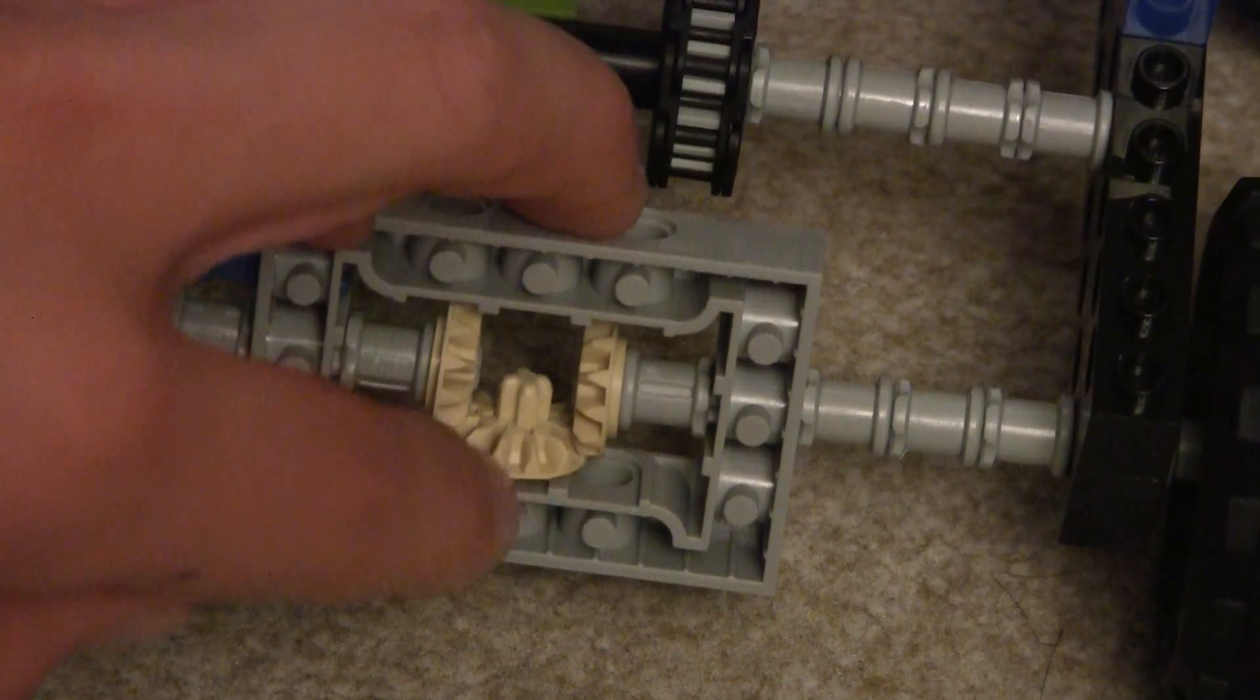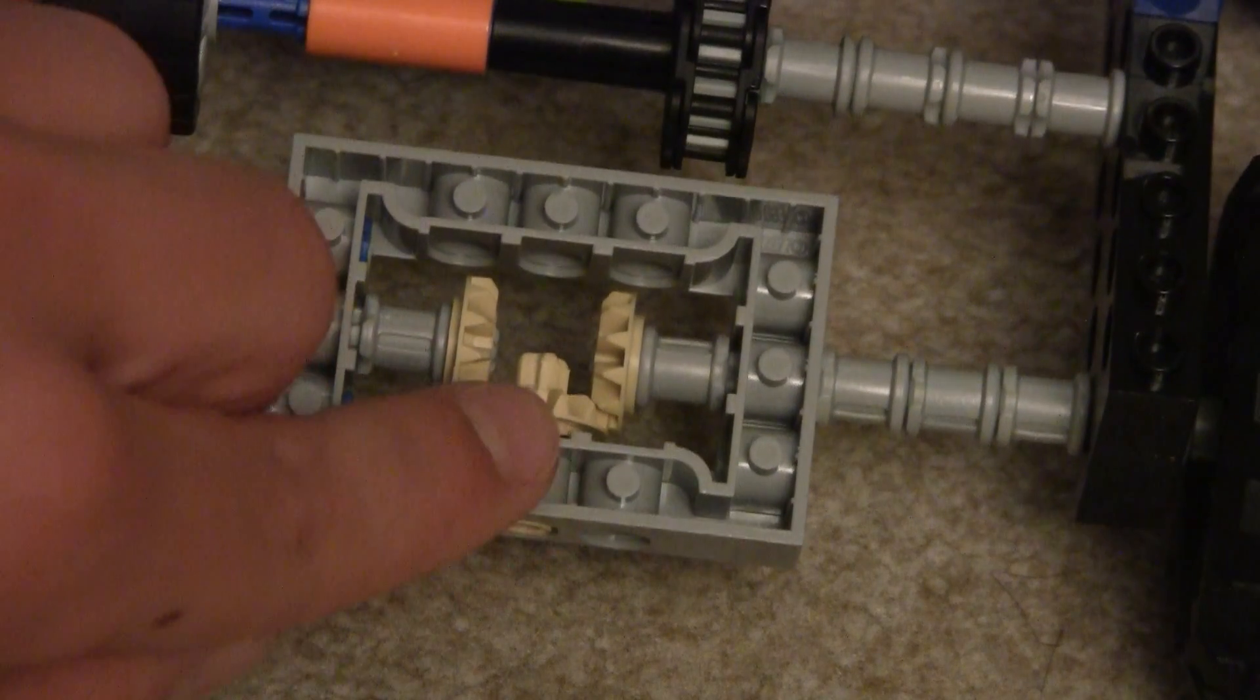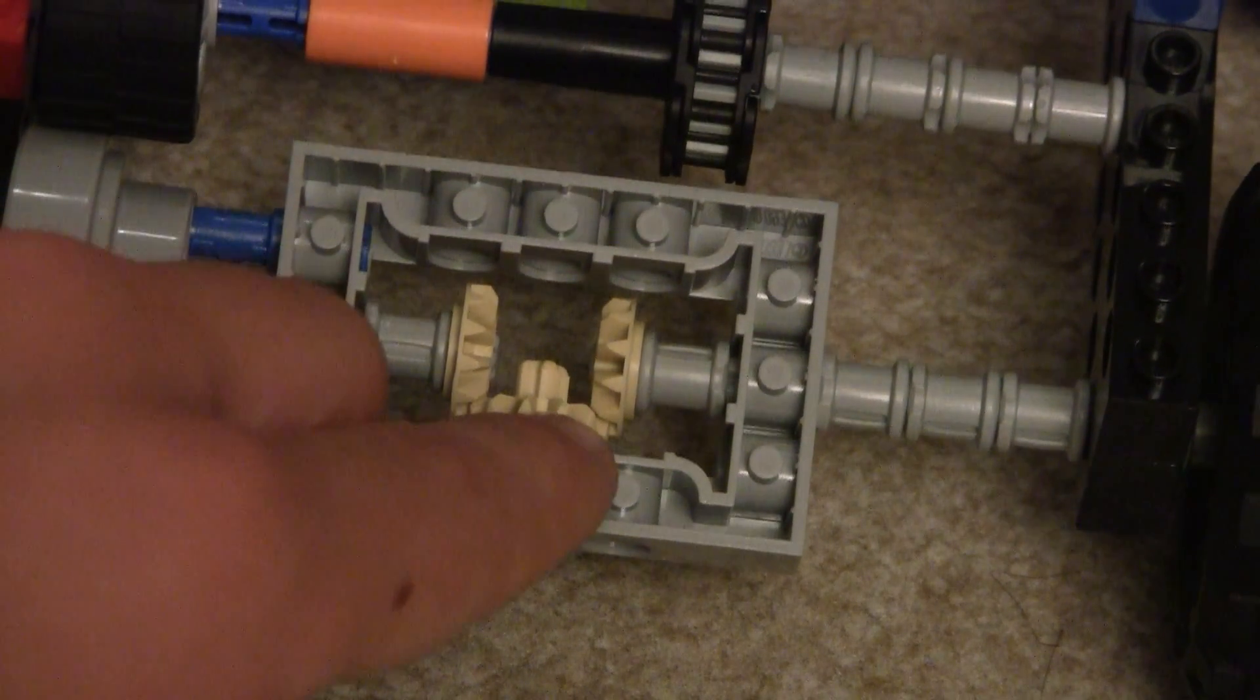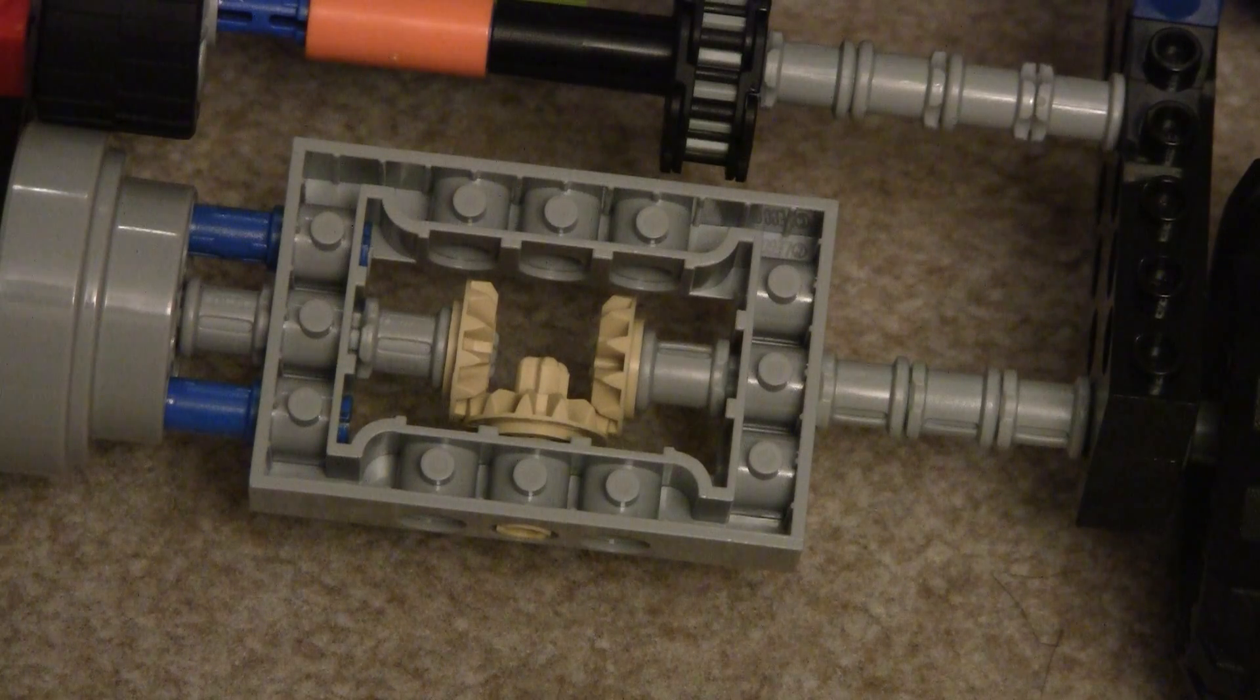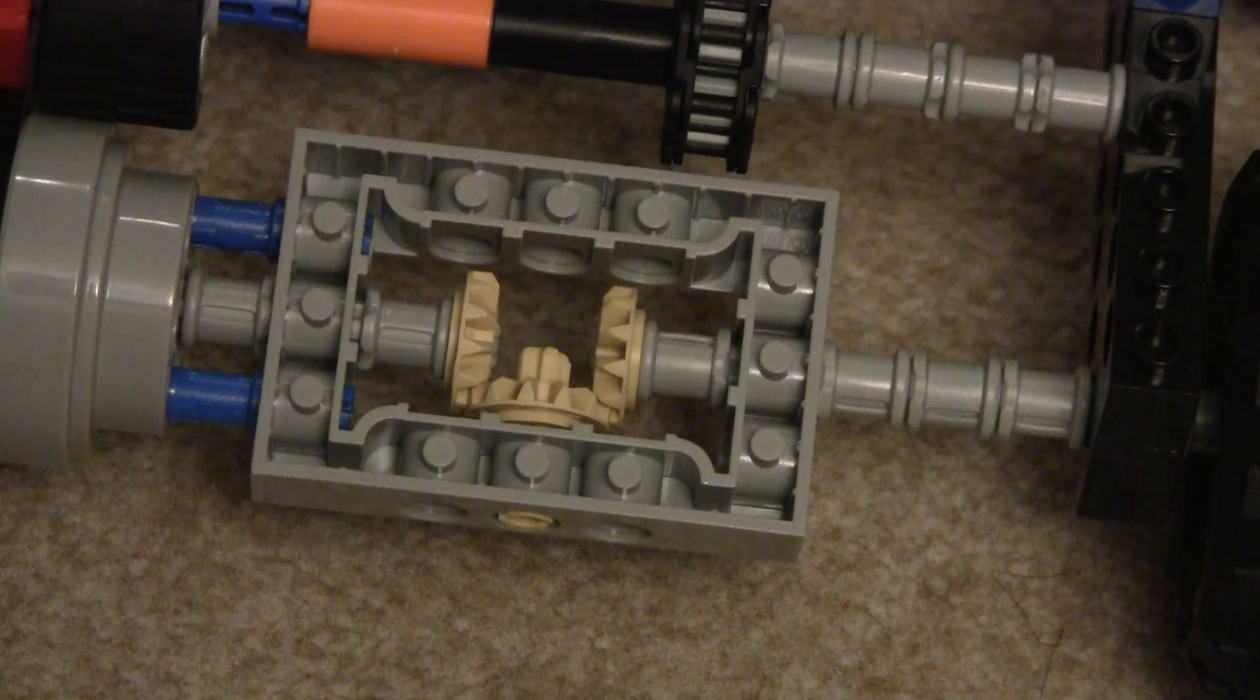But when one stops, this gear has to keep on spinning, so this gear starts turning. Normally it's slow and stopped when both wheels are going at the same speed. But when one wheel stops, this starts spinning, which allows this to go twice as fast.